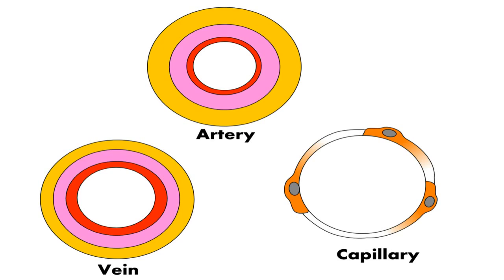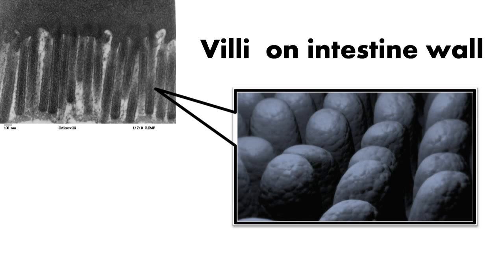Look at the differences between the three types of blood vessels. Arteries have very thick walls because they must withstand the pressure created by the pumping of the heart. Capillaries have a very thin, single-layer wall so blood can supply oxygen and food to tissues through pores. Vein walls are thick again, but not as thick as artery walls.